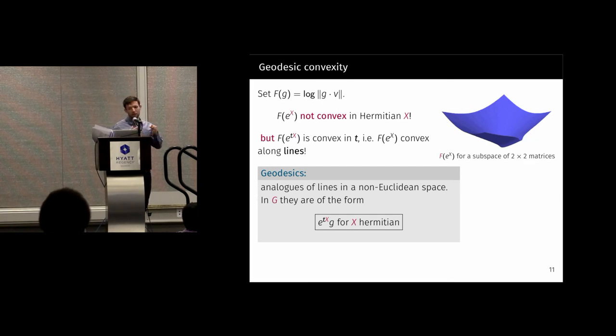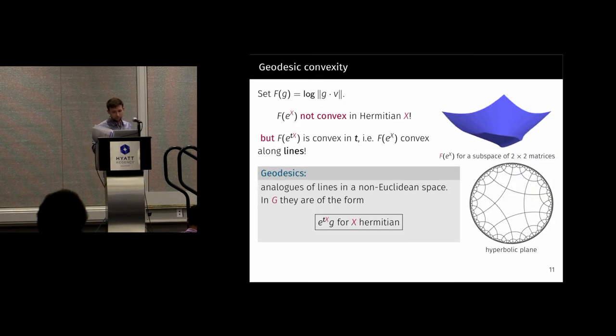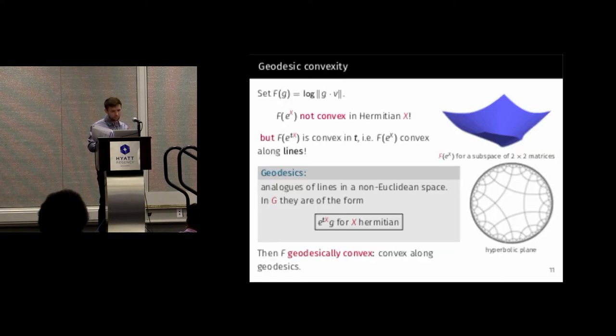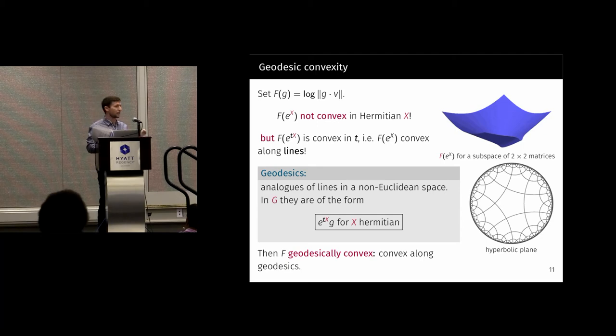Geodesics are analogs of lines in a non-Euclidean space. In the group G, they're going to be of the form e to the tx times g, so you left multiply by this e to the tx thing. The general idea is to do the usual optimization algorithms, except when something tells you to go along a line, you go along a geodesic. An example of a non-Euclidean geometry is the hyperbolic plane. This disk is the space, and the geodesics, which are sort of the analogy of lines, are these funny segments of circles passing through this disk. And the geometry we're looking at is going to be negatively curved, like the hyperbolic plane.